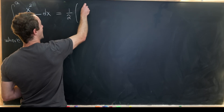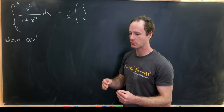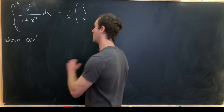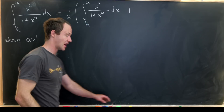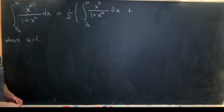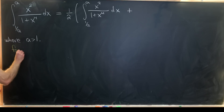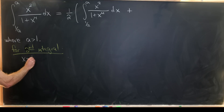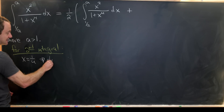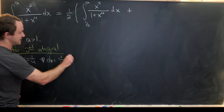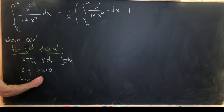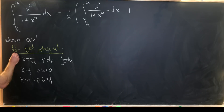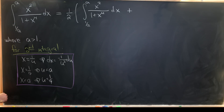We kind of hide the fact that we're using a substitution to loop back to something similar to itself. So we've got the integral from 1 over a to a of x squared over 1 plus x to the fourth dx plus another copy of this integral. For the second copy, we'll make a substitution: let x equal 1 over u. That means dx equals negative 1 over u squared du. When x equals 1 over a, u equals a, and when x equals a, u equals 1 over a.